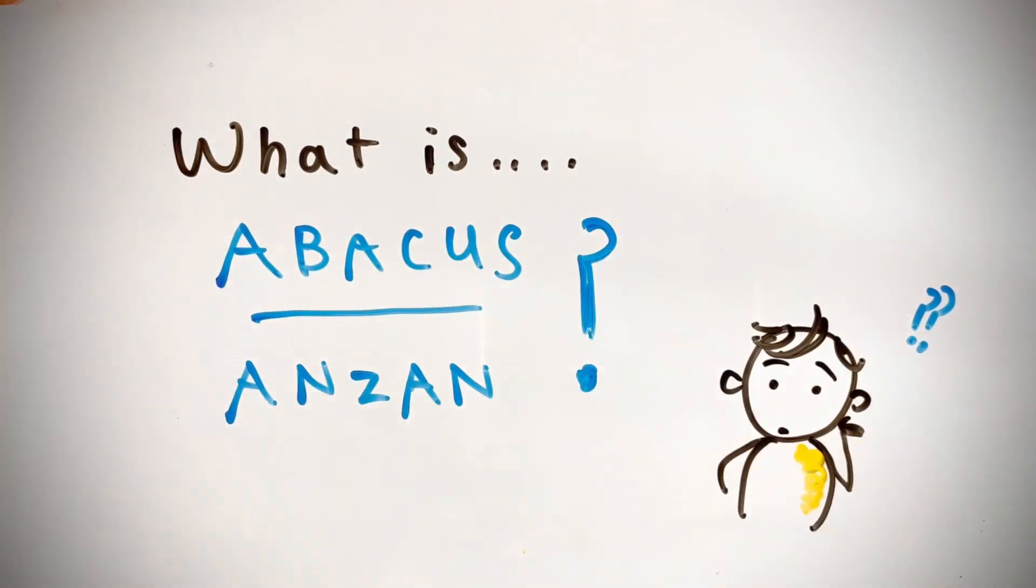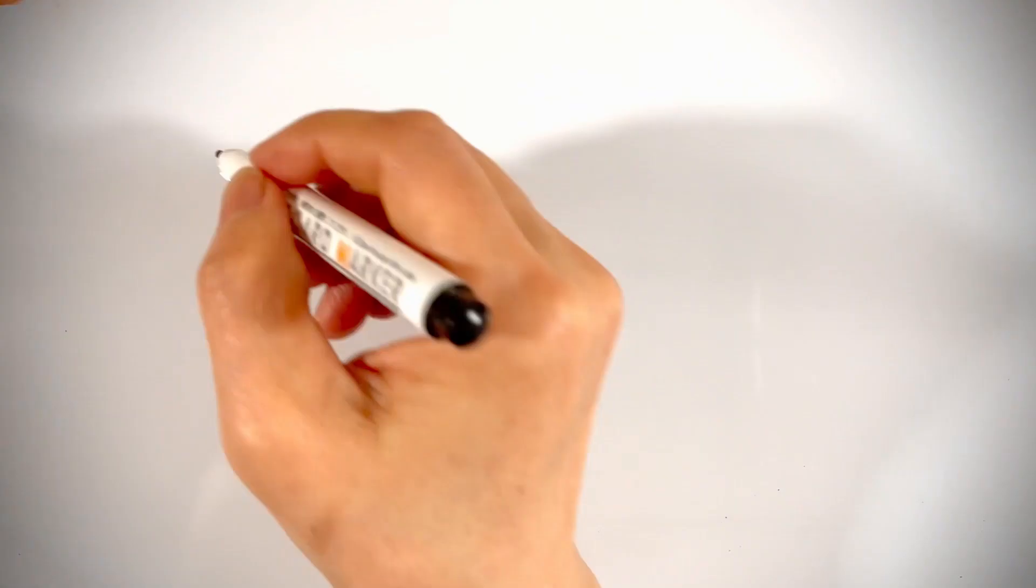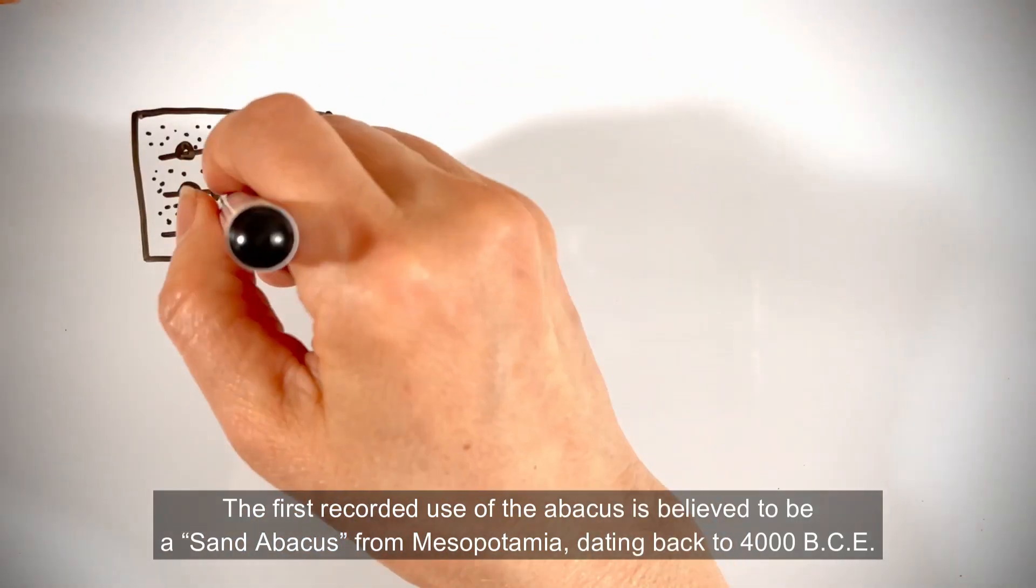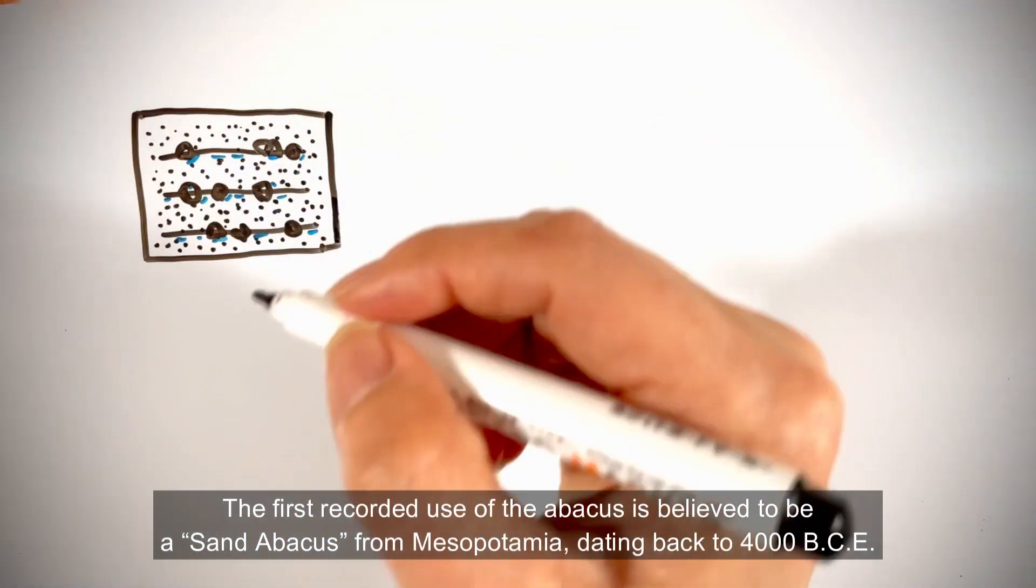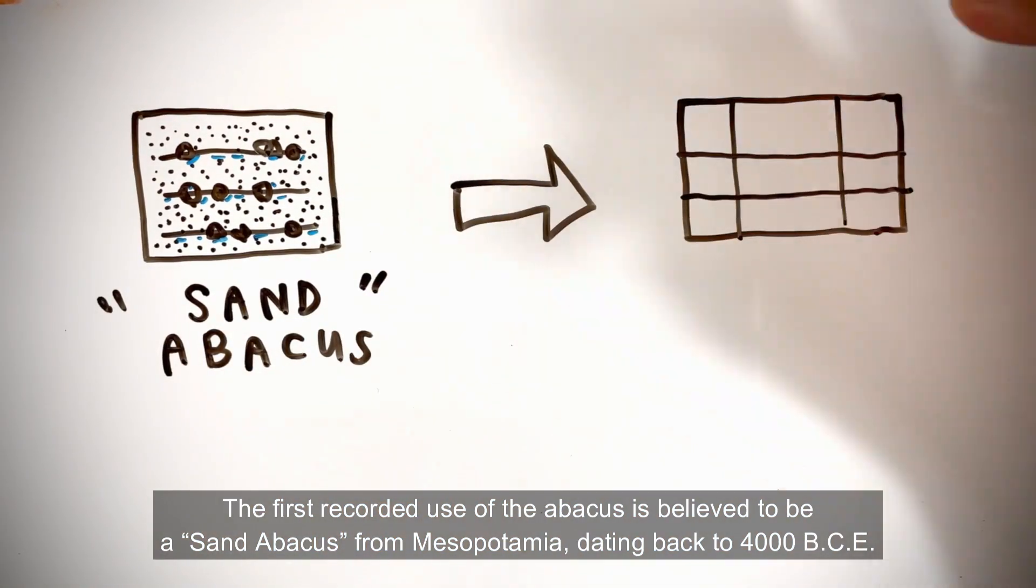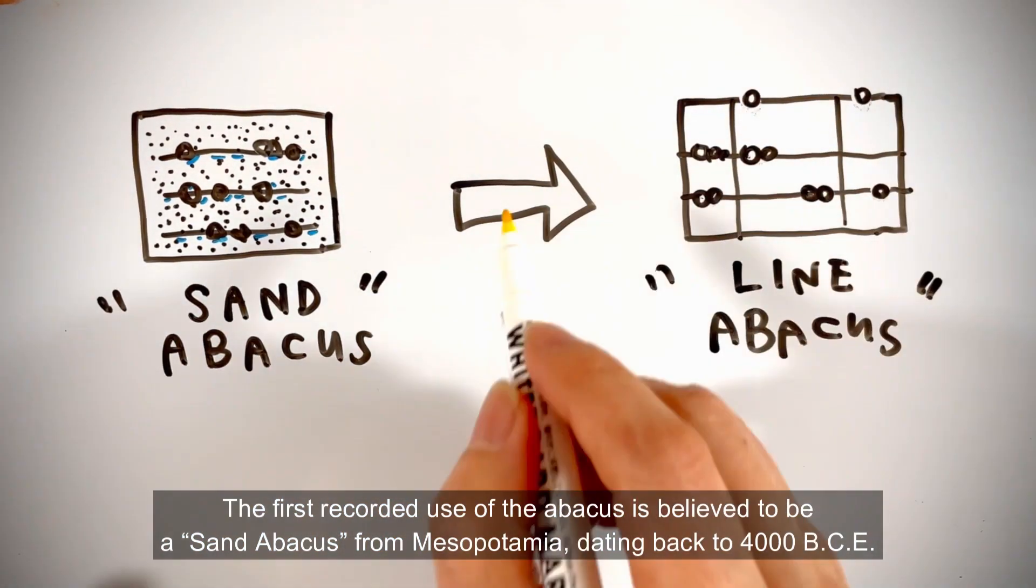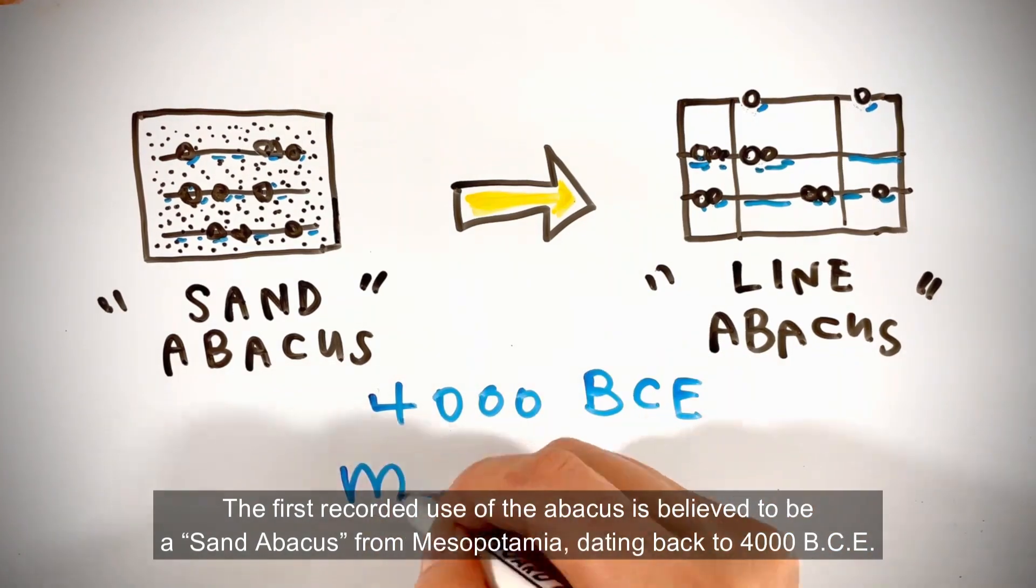What is Abacus and Anzan? The first recorded use of the Abacus is believed to be a sand Abacus from Mesopotamia dating back to 4000 BC.